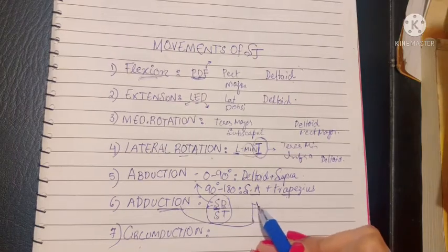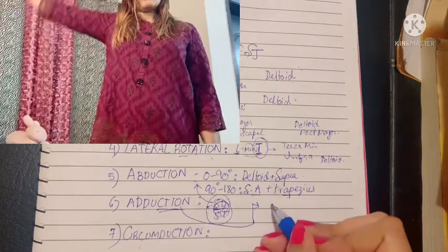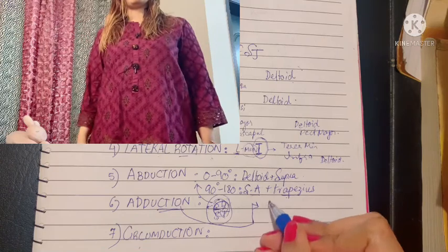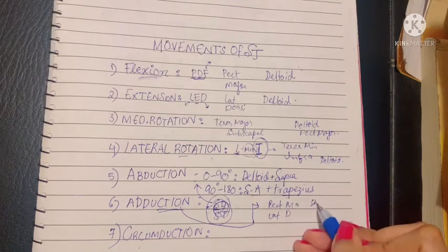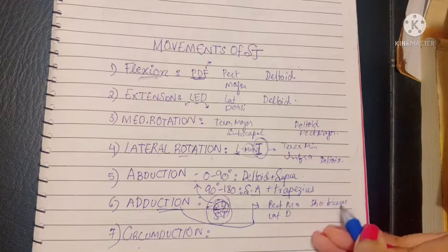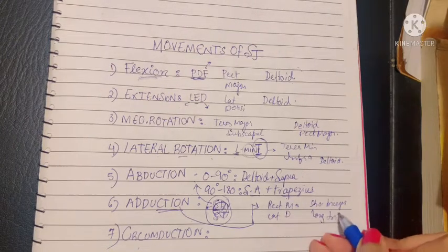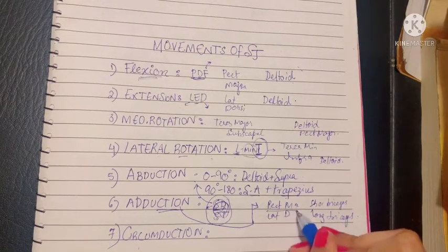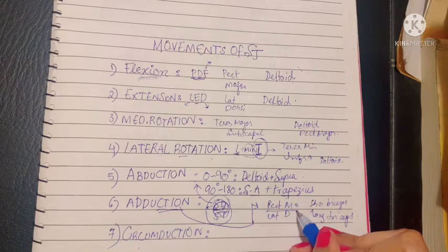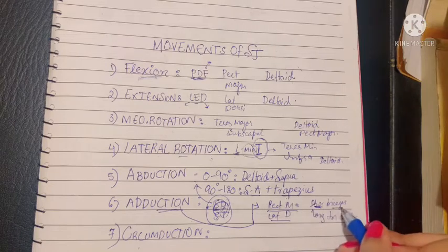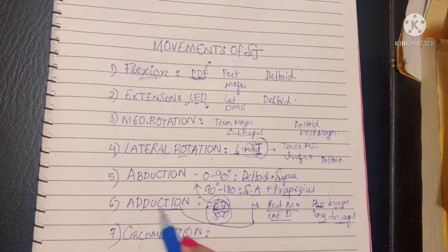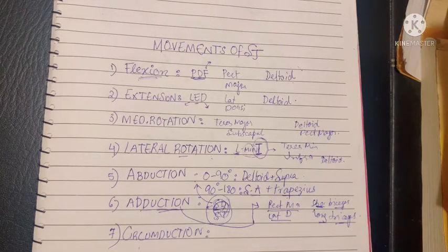Moving on, let's talk about adduction. Adduction is done by the pectoralis major, latissimus dorsi, short head of biceps, and long head of triceps. These muscles—pectoralis major, latissimus dorsi, short head of biceps, and long head of triceps—are all involved in adduction at the shoulder joint.